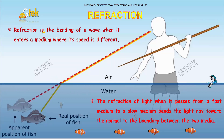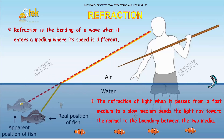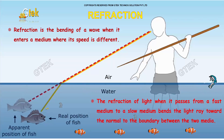Refraction is the bending of your wave when it enters a medium where its speed is different. You are able to see the real position of a fish here, but it is shown as here - that is the apparent position of the fish. The refraction of light when it passes from a fast medium to a slow medium bends the light towards the normal to the boundary between the two media.